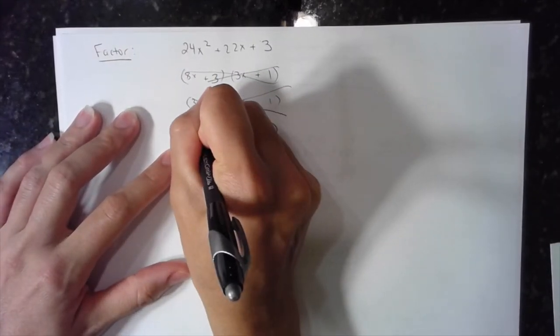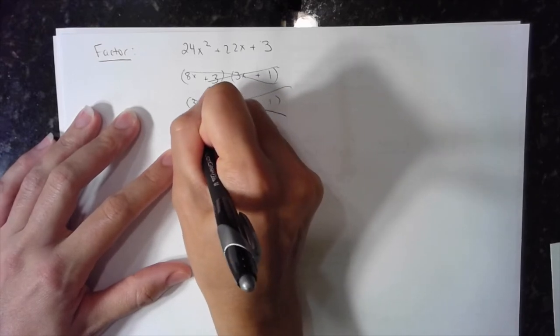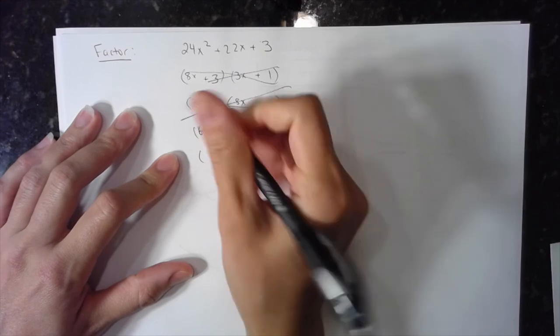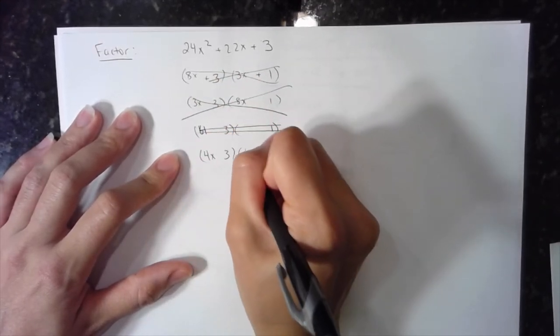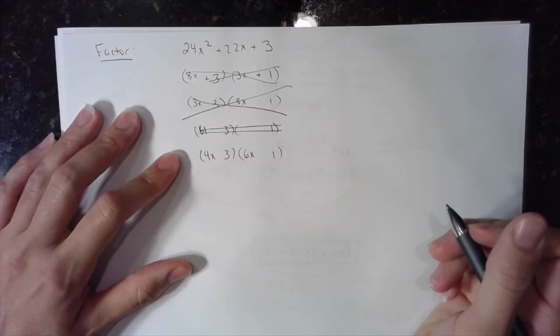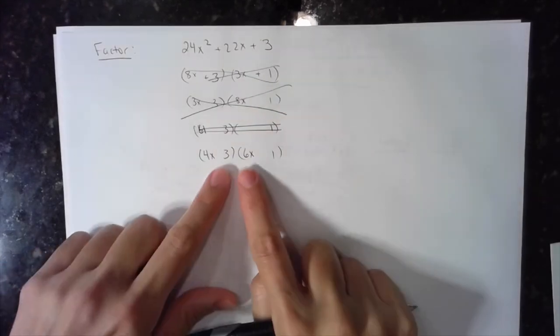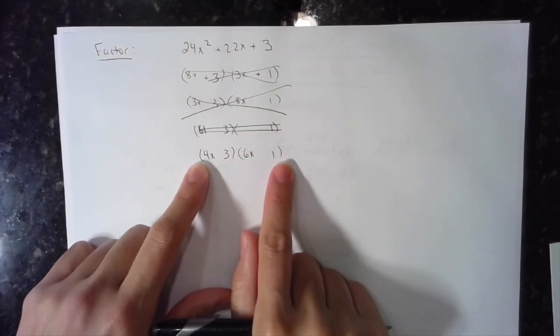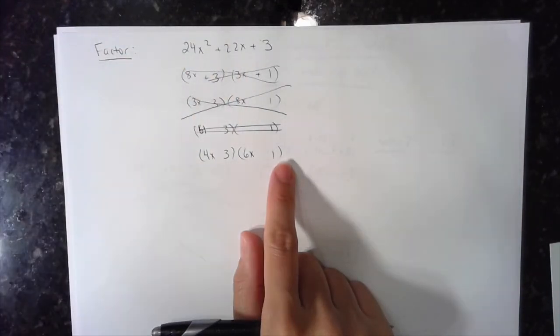So let's see. Let's try the 6 here. The 4 here. Let's try the 4 here, the 4x and the 6x here. Okay? Try to keep your work neat so that you can always backtrack. 18 and 4. 18 and 4 works if the signs match.